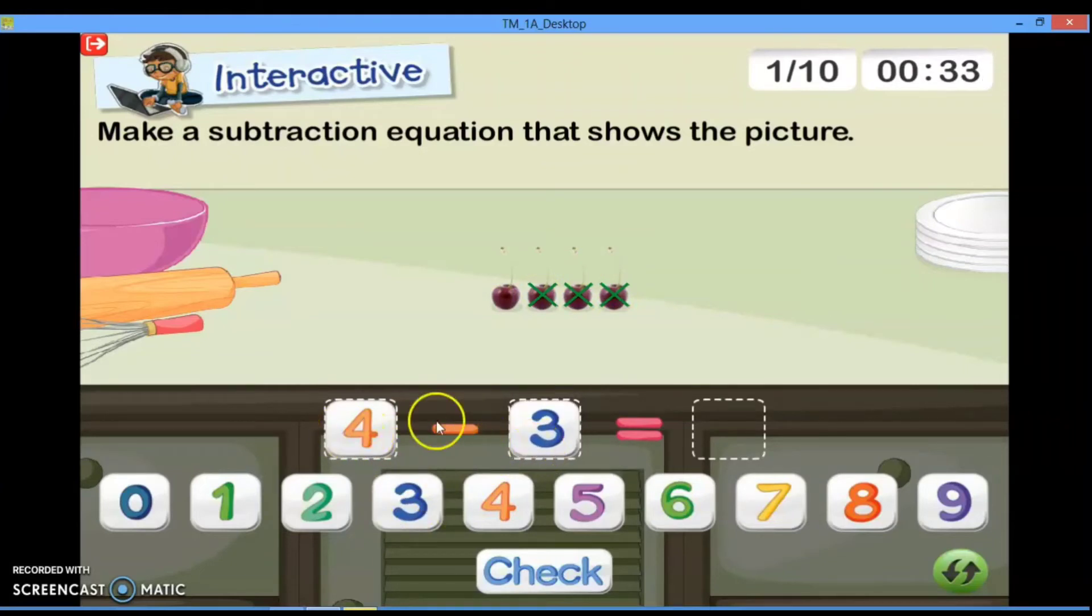Okay, sekarang kita kurangi. Four minus three equals empat dikurang tiga. Hasilnya adalah di sini sisa ceri yang tidak diberi tanda silang. Ada berapa teman-teman? Ada satu. Kita letakkan satu di sini. Let's check it. Betul.